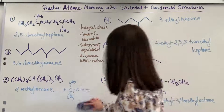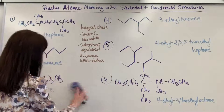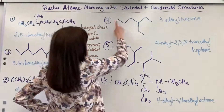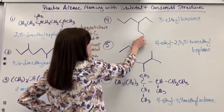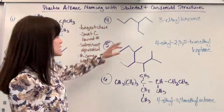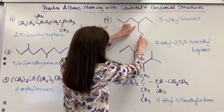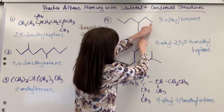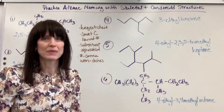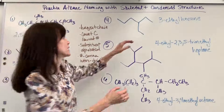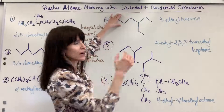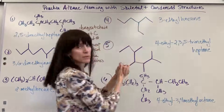Let's do number four — we have another skeletal structure here. Let's count our chains to find the longest continuous chain of carbons. Counting from one end: one, two, three, four, five, six. Counting from the other end: one, two, three, four, five, six — it's the same. And you'll notice either way we look, if I do this chain of six, there is an ethyl group; or if I do this other chain of six, there's an ethyl group — you'll still get the same name. So my longest continuous chain is hexane.